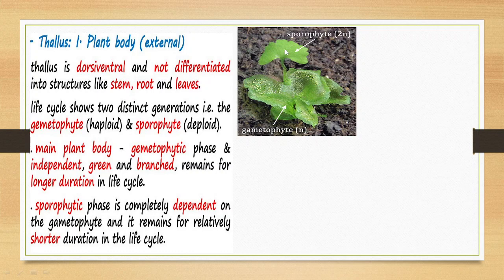The gametes unite and produce a sporophyte, which grows upon the same gametophyte. The two gametes fuse to produce a zygote, which is diploid (2N). The zygote develops into a sporophyte, a diploid structure. The sporophyte then undergoes reduction division to produce spores, which are again haploid. These spores fall on the ground, grow, and produce a new gametophyte. This is how the two distinct generations — gametophyte and sporophyte — alternate in the life cycle.